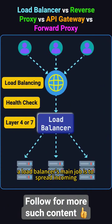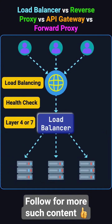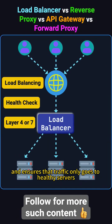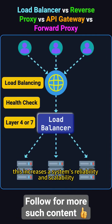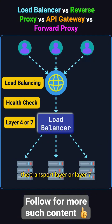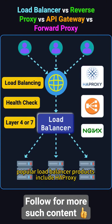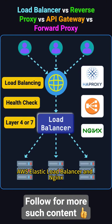A load balancer's main job is to spread incoming traffic across multiple server instances. This keeps any single server from getting overwhelmed and crashing, and ensures that traffic only goes to healthy servers by performing health checks. This increases a system's reliability and scalability. Load balancers operate at either layer 4, the transport layer, or layer 7, the application layer, of the OSI model. Popular load balancer products include HAProxy, AWS Elastic Load Balancer, and NGINX.